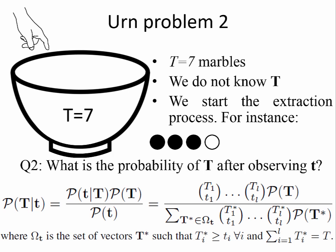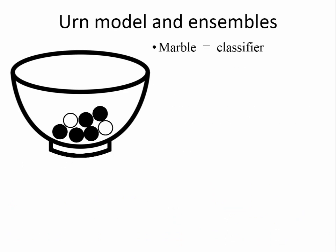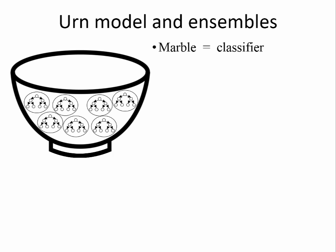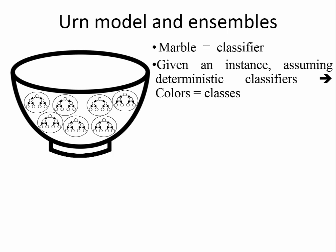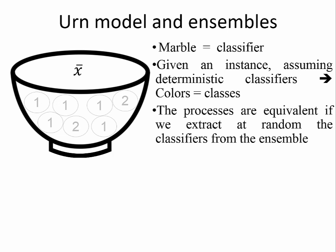The equivalence of majority voting in ensembles of classifiers and this last urn problem is as follows. Marbles are equivalent to base classifiers in the ensemble. Given an instance to classify and assuming deterministic classifiers, the marble colors are equivalent to the class outputs of the classifiers. If we extract at random the classifiers from the ensemble, both processes are equivalent.